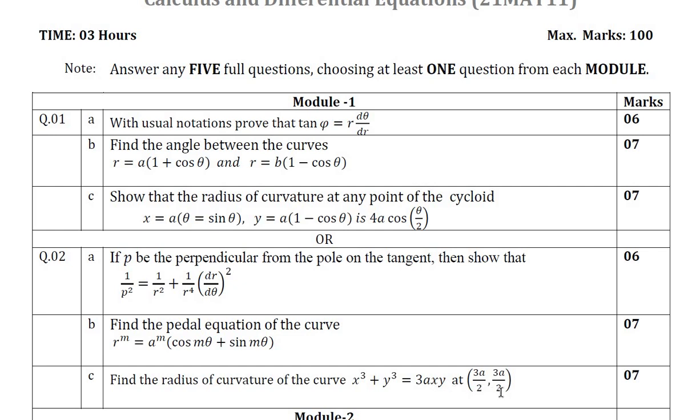See to that which question is easy for you, then answer that question seeing all the three options. Question number 1 has three questions and question number 2 also has three questions. Which one you are comfortable you can answer, either one or two, this is the way of answering.